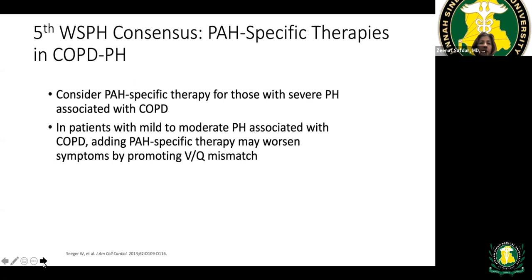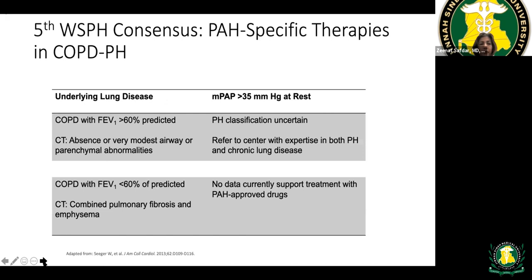PH-specific therapy may be considered for severe pulmonary hypertension in COPD, but caution is required: pulmonary vasodilators can shunt blood to non-oxygenated areas, increasing oxygen requirements. One patient went from 2 to 6 liters of oxygen after two PH medications were added. When those medications were withdrawn, oxygen requirement returned to 2 liters. Right heart catheterization is essential to determine whether the problem is the lung parenchyma or the vasculature.